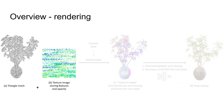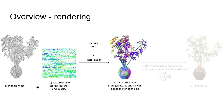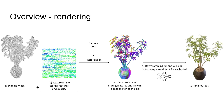We couple the triangle mesh with the texture map to add details. The textures contain features instead of RGB colors to model view-dependent colors. During rendering, we rasterize the mesh to obtain a feature image, then we use an MLP implemented in a fragment shader to convert the features and viewing directions into pixel colors.